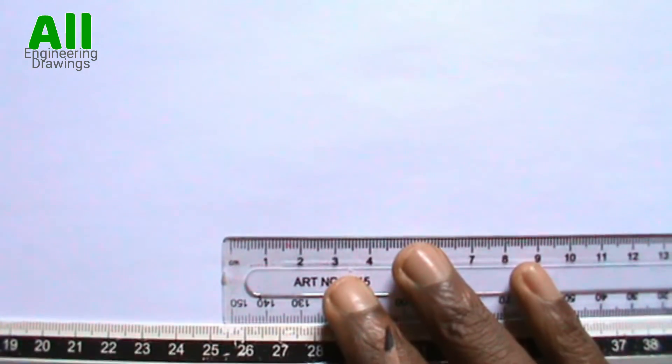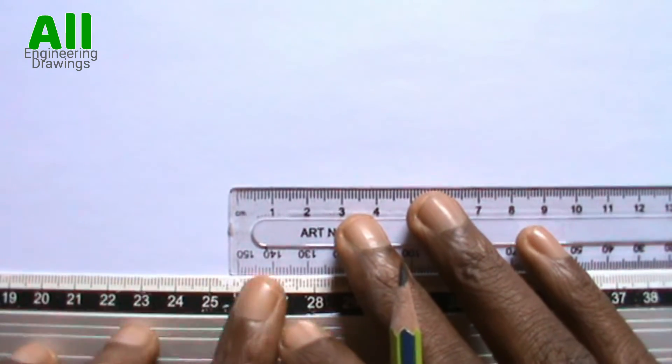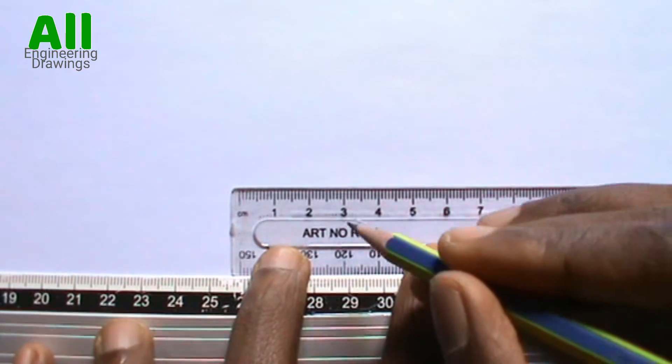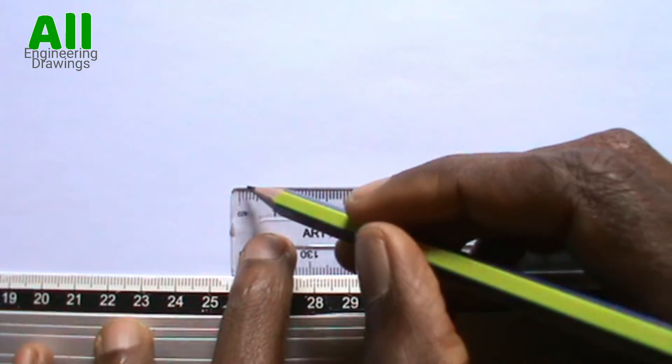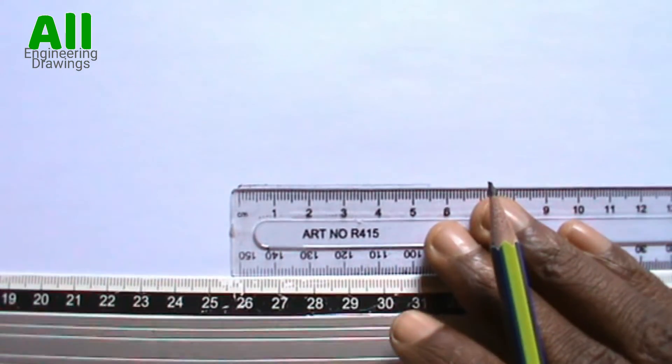To draw a thin horizontal line, you have to use your T-square to support your ruler this way. Then you can draw the horizontal line to the required length. Now, you can label the line.